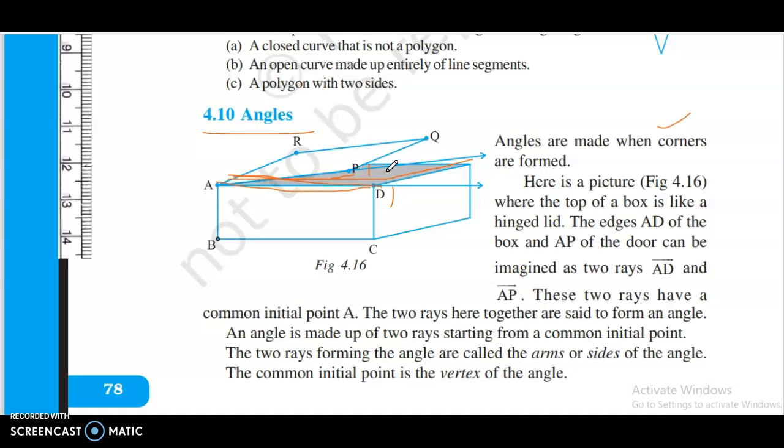These two rays have a common initial point. The two rays together are set to form an angle. An angle is made up of two rays starting from a common initial point. The two rays forming the angle are called the arms or sides of the angle. The common initial point is the vertex of the angle.